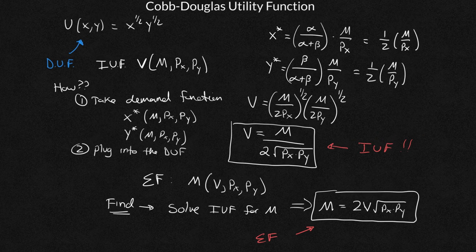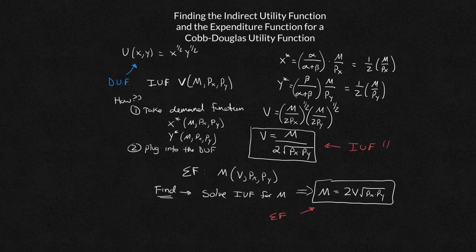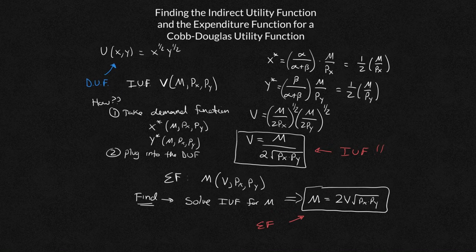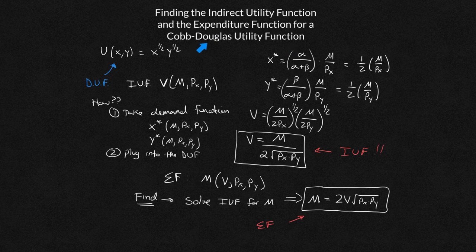So there you have it, folks. I'll make this a little smaller so we can see it all on one screen. We'll review it. We want to find indirect utility function, expenditure function for Cobb-Douglas. The question my student sent me had the exponents on x and y is one-half, one-half. We take the demand function, plug it into the direct utility function to get that indirect utility function. It's just two steps.